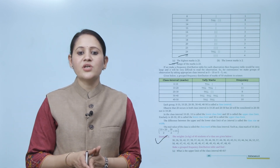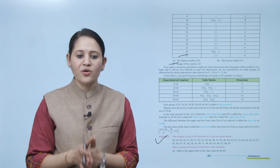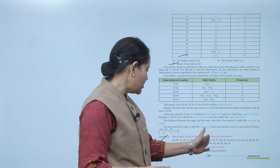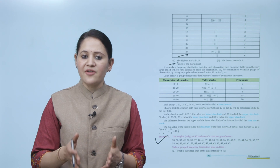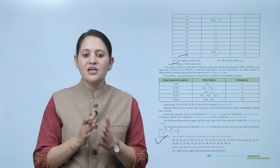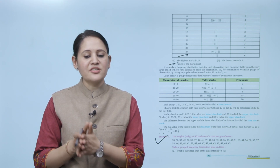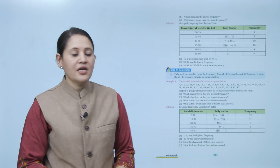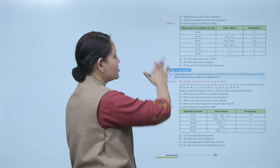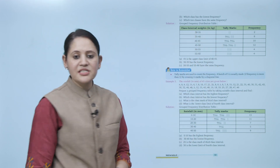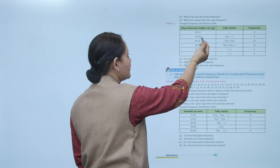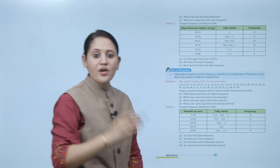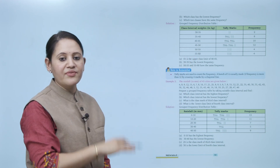The weights of 40 students of a class are given. We have to make a grouped frequency distribution table and find what is the upper limit of class interval 40–50. We'll make a frequency distribution table with class intervals: 30–35, 35–40, 40–45, 45–50, 50–55, 55–60.